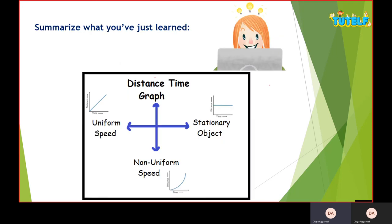So distance-time graphs are three types. One is uniform speed, straight line. Non-uniform speed, curve line. And stationary object, which is a straight line parallel to the x-axis.